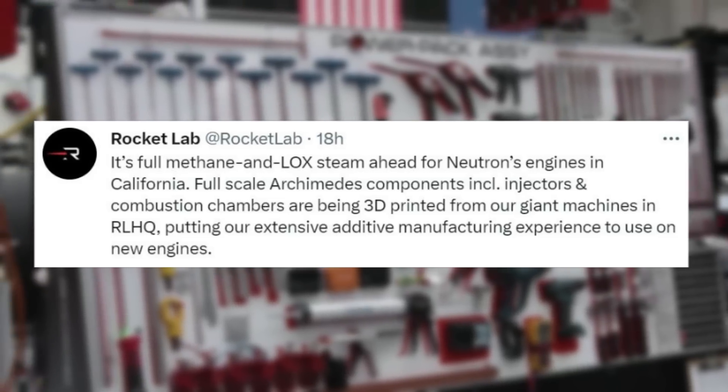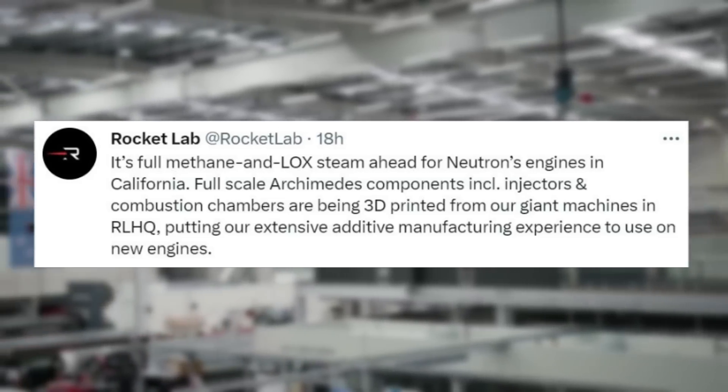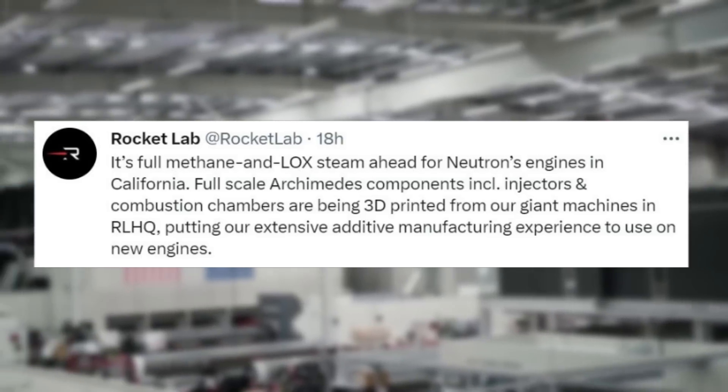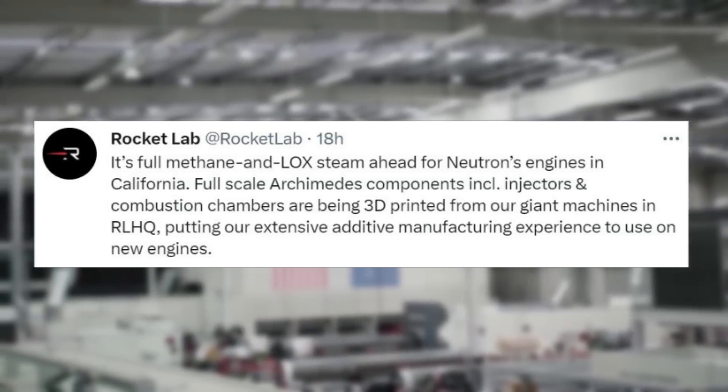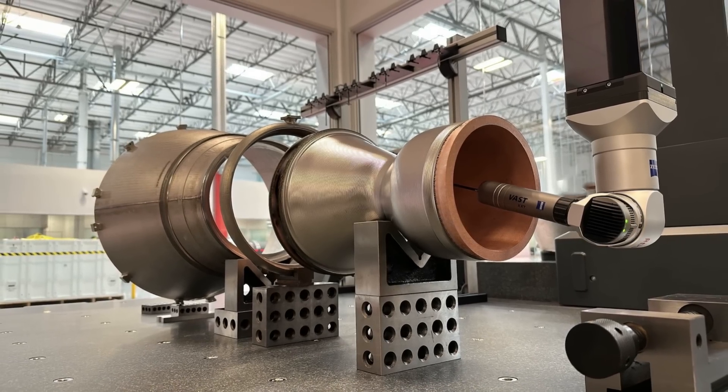Full-scale Archimedes components including injectors and combustion chambers are being 3D printed from our giant machines in Rocket Lab HQ, putting our extensive additive manufacturing experience to use on new engines. This included an image of the hardware being manufactured in the facility.